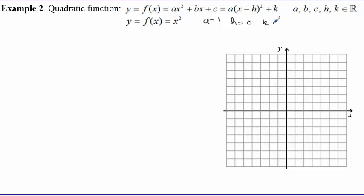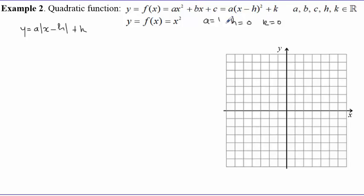I would like to remind you of the discussion we had when we looked at the absolute value function. The absolute value function was given in general as a|x - h| + k. All that knowledge we learned there is still very useful here. You can think of the square here just like the absolute value bars — it's the quadratic square applied to (x - h).